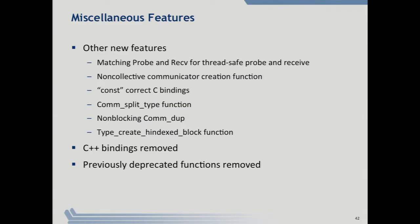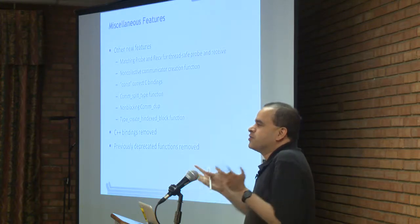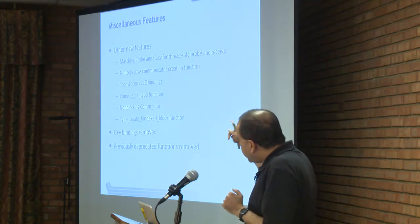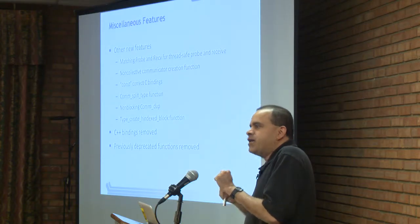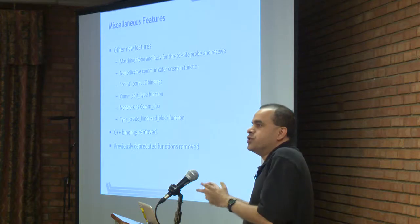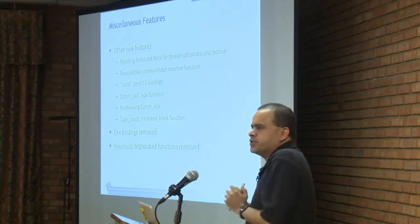There are miscellaneous features, including a new type of probe called MProbe. MPI has a probe function to check if there is an incoming message before calling receive. The problem in a multi-threaded case is a race condition — another thread could call receive first. The matched probe returns a handle that you pass to the new MReceive function, so there is no race condition.